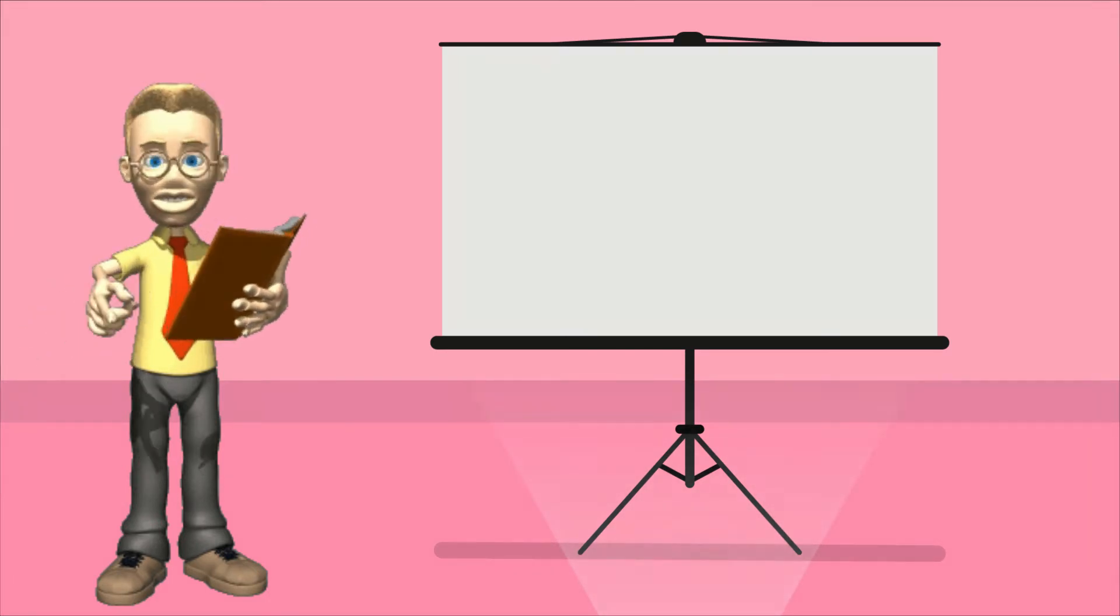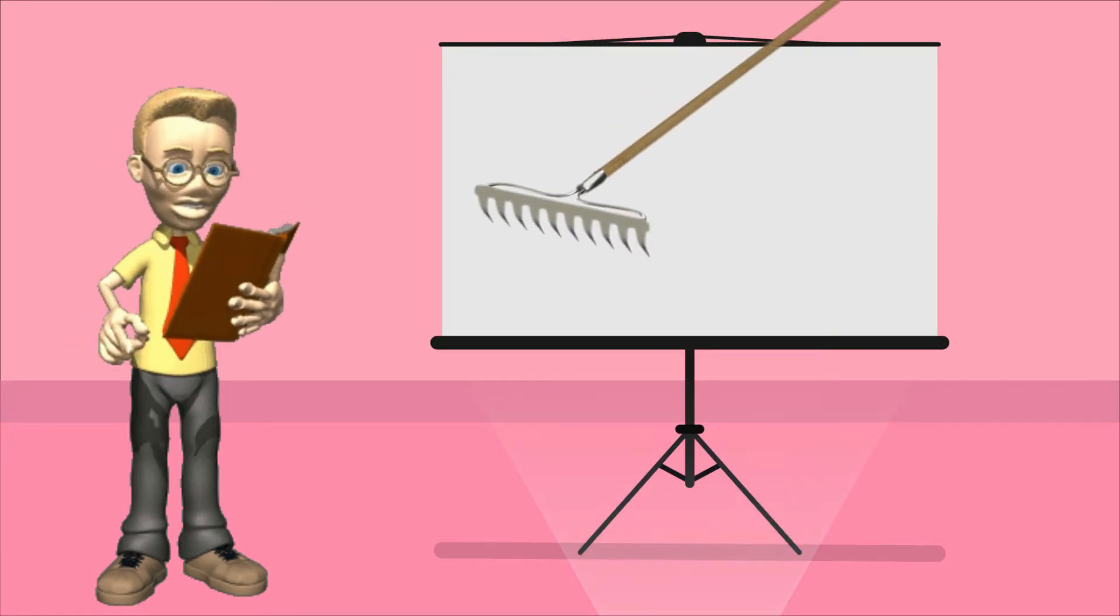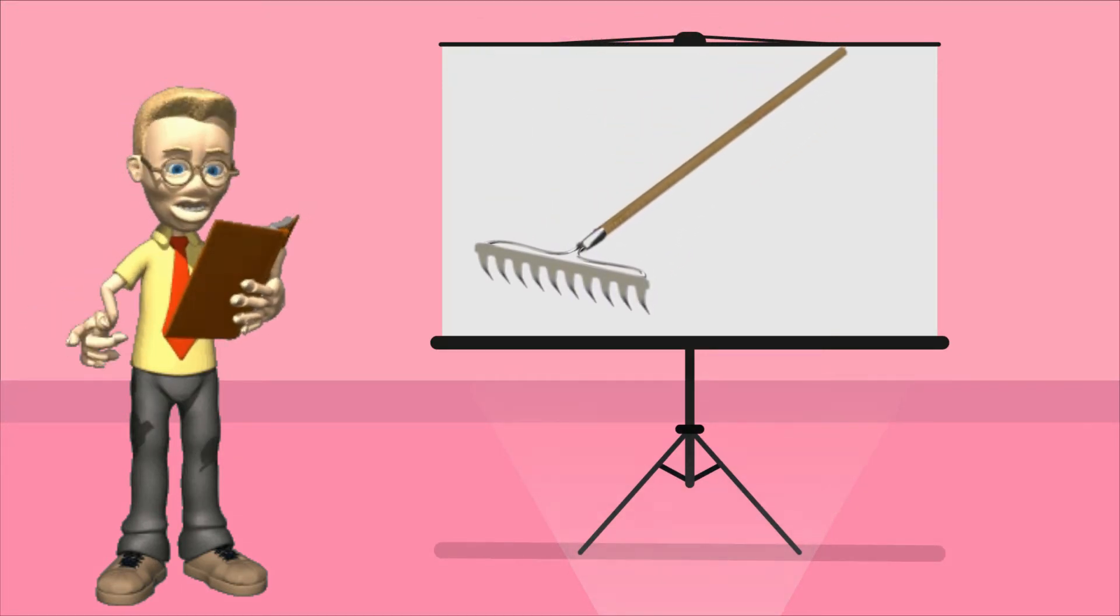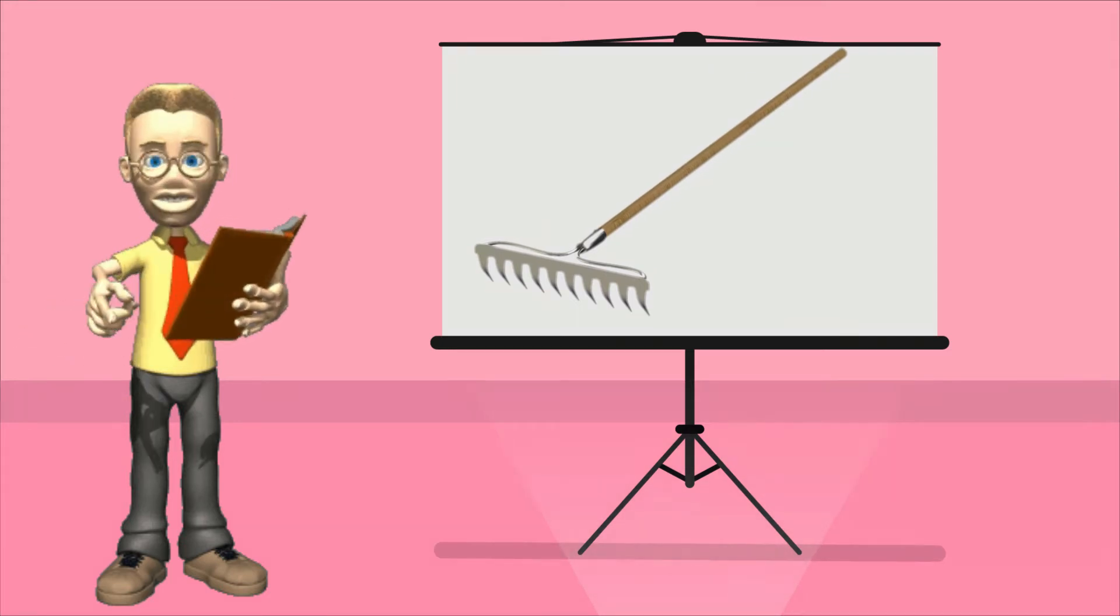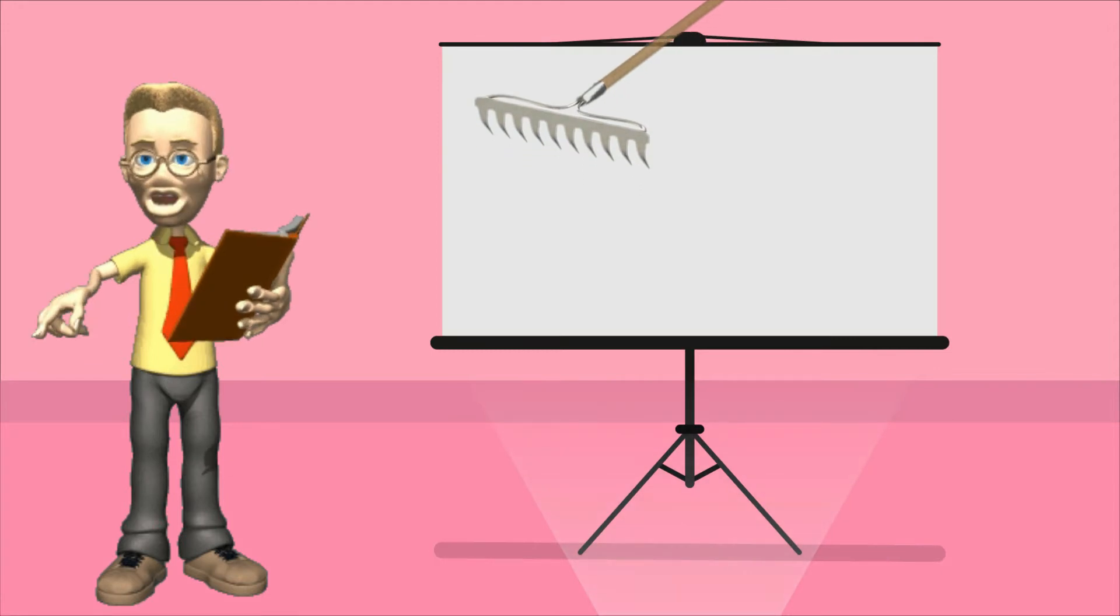The first tool is rake. Rake is a long-handled tool with a bar at one end with teeth in it. It is used for smoothing the soil and gathering loose leaves, hay, or straw.